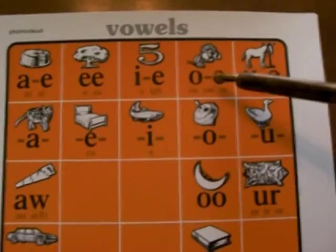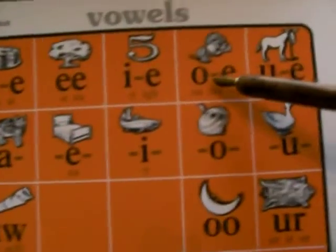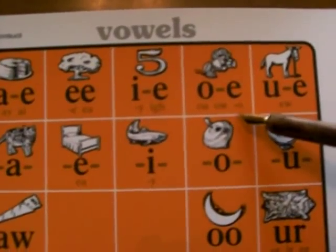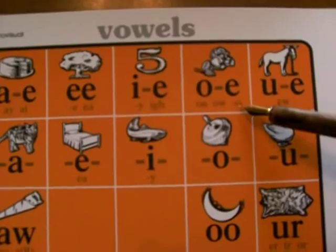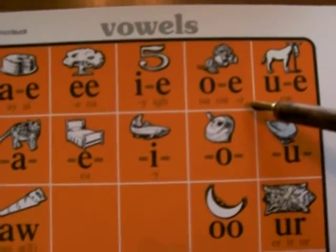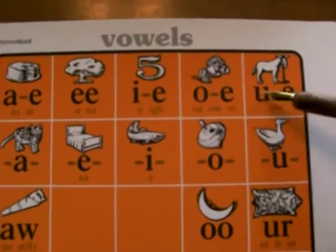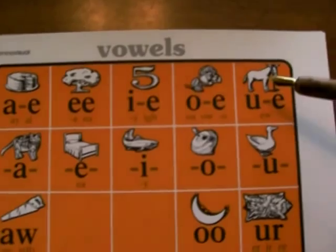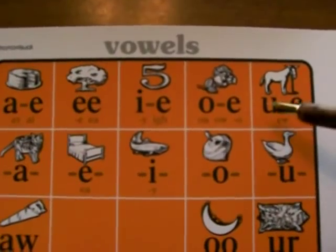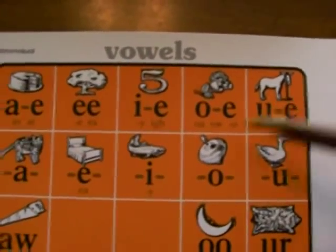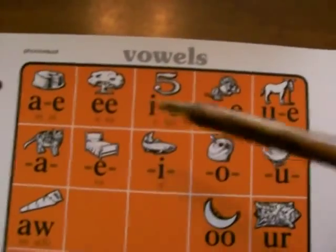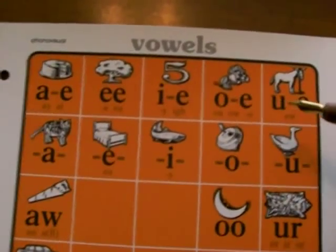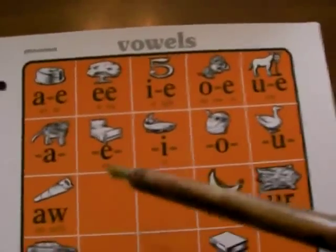O as in rows — the primary spelling is O-consonant-E, and secondary spellings OA, OW, and O by itself as in so, go, and no. Then we have mule — U, spelled U-consonant-E and also EW. So the long vowels A, E, I, O, U each have their primary and secondary spellings.